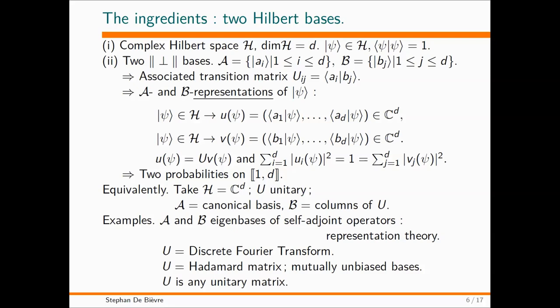I call this a Hilbert space, although it's finite dimension. It's just a Hermitian space, and it is equipped with some extra structure. These bases have each d basis vectors, and then you can construct the transition matrix U. You can get what I call the A and the B representations, which are just the obvious unitary that maps H into C^d by using the components on the base. The entire talk deals with one Hilbert space of finite dimension and two bases, nothing else. You can do this equivalently by taking H to be C^d and take U to be unitary. Then you can take for A the canonical basis and B the columns of U, which is the same thing.